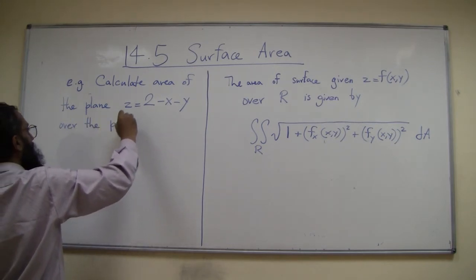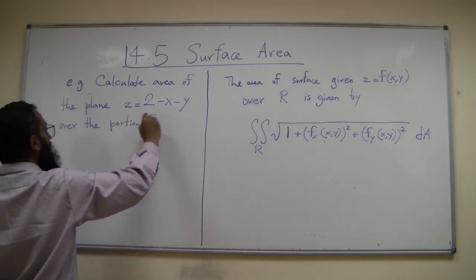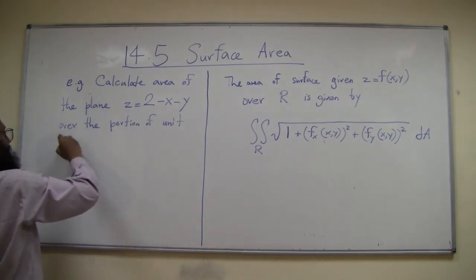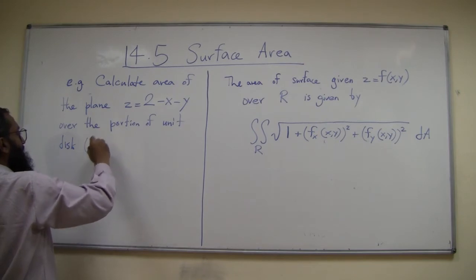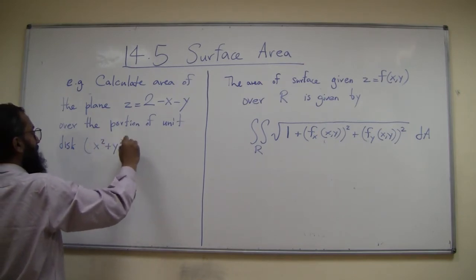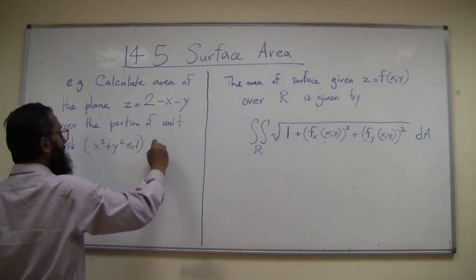Over the portion of unit disk - unit disk means disk of radius 1, i.e., x² + y² ≤ 1 in the first quadrant.